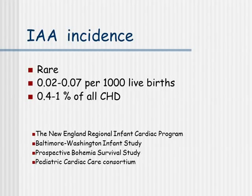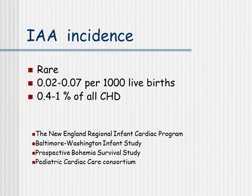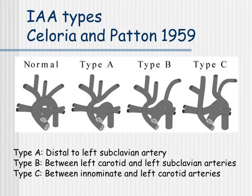The incidence of Interrupted Aortic Arch, as we heard, is very low. It's a rare condition, about less than 0.1 cases per 1,000 live births and less than 1% of all congenital heart disease. Here are the types of the IAA, with type B being the most common one and type C being the least common.